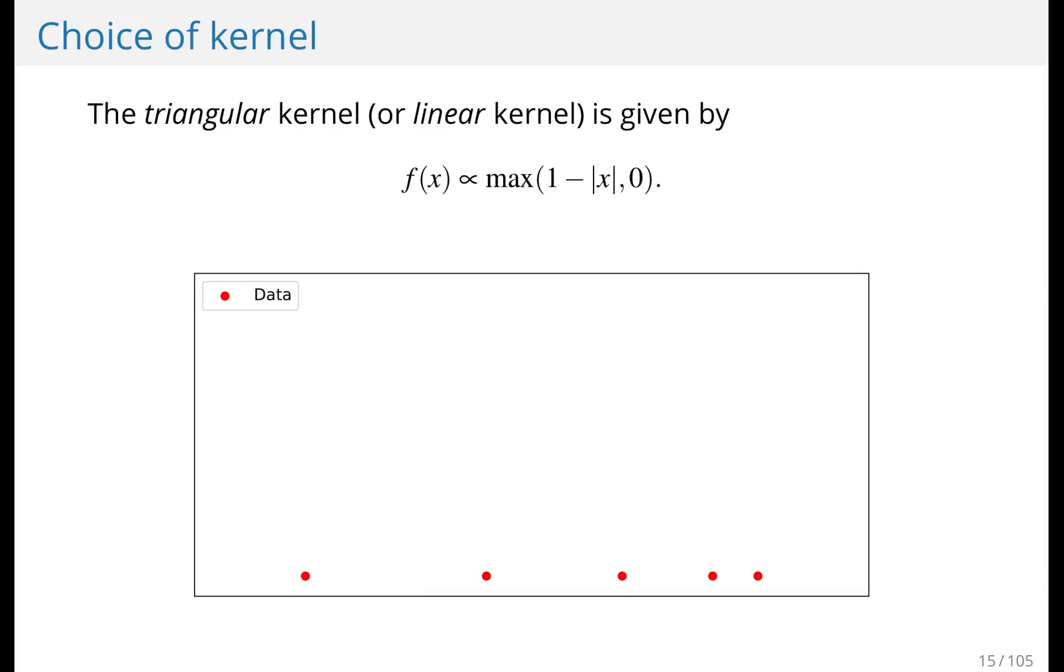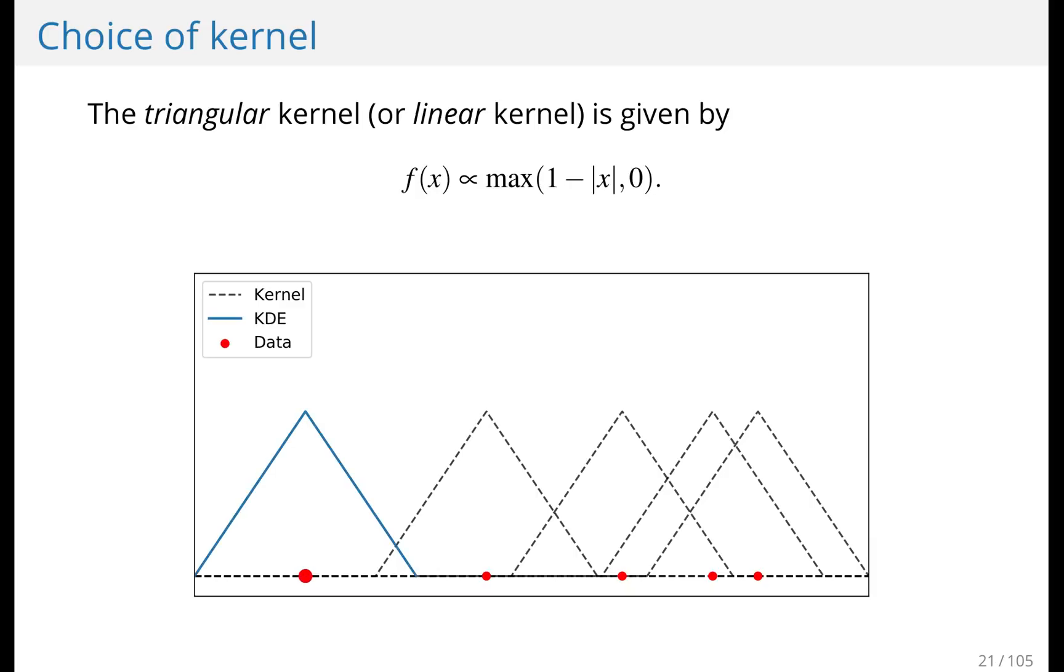Let's see one more example now with the triangular kernel. We add the kernel onto every single data point, and then we sum these together for a density estimate. Notice that this estimate is not nearly as smooth as the Gaussian one that we saw earlier.